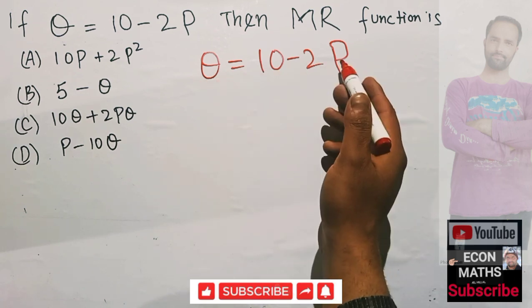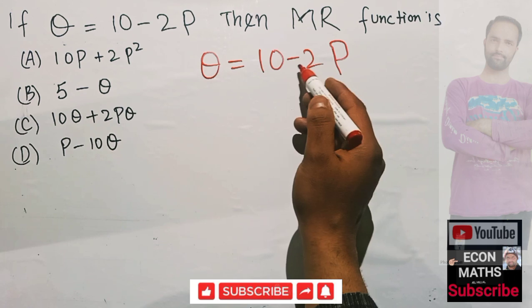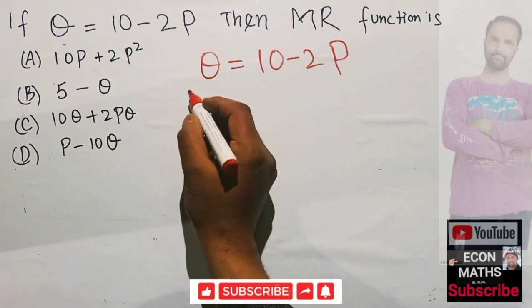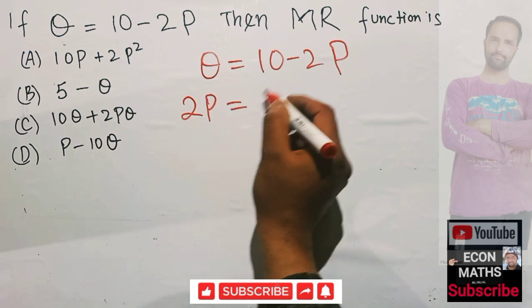When we solve this demand function for P, we get the inverse demand function. So if I just transpose this term to the left-hand side, it will become plus 2P. So we have 2P is equal to